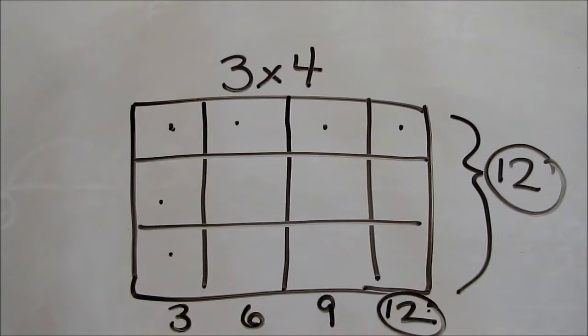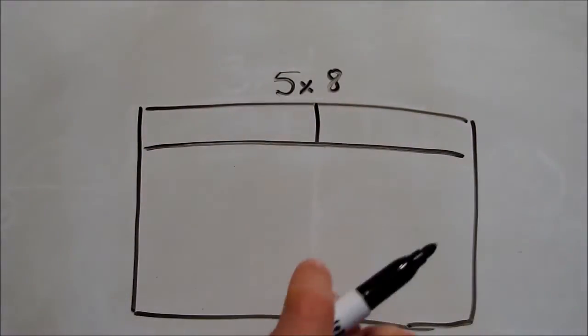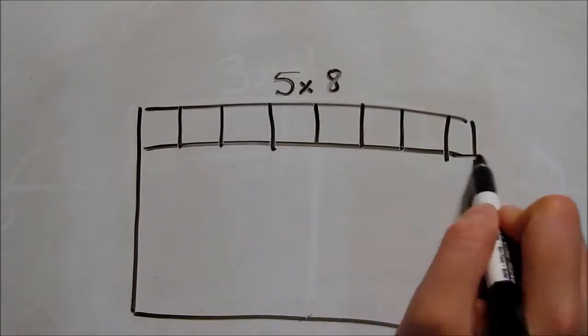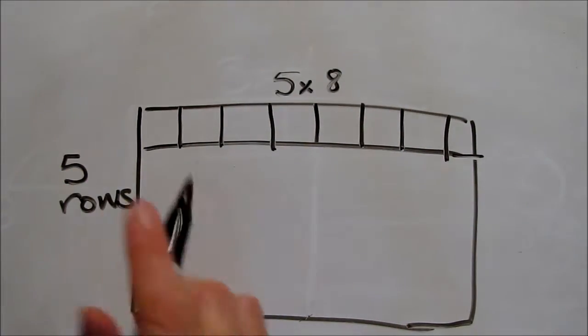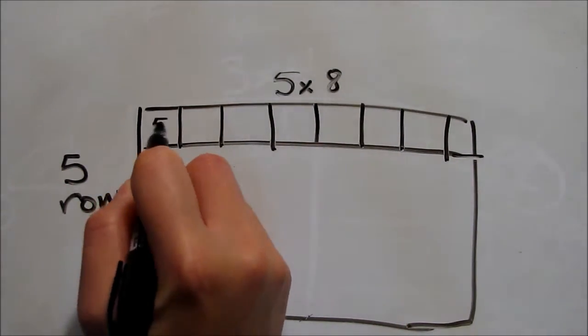Over time, we'll move to more abstract arrays. We might just see one column and be told how many are in each row. For instance, this array shows 5 times 8. We can see the 8, but not the 5. We know the 5 are there, so we can count by 5s to find the total.